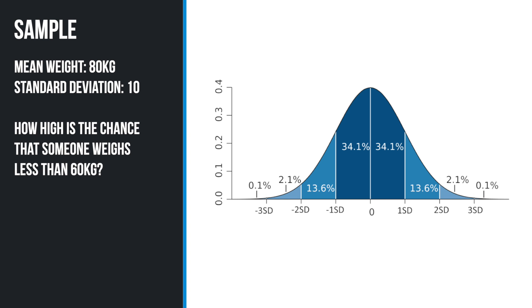A probability that is often used is five percent, better known as the p-value 0.05. If results in scientific research fall outside the border of five percent, we are talking about statistically significant results. For example, if we take a sample of patients with a mean weight of 80 kilograms and a standard deviation of 10, the chance that a patient weighs less than 60 kilograms — which is minus two standard deviations from the mean — would be as little as 2.3%.